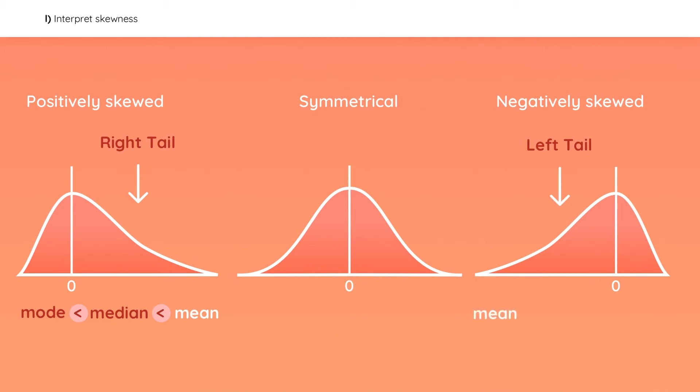The mean in this case is closest to the tail, so it is the smallest value, followed by the median, and then the mode. For symmetrical distributions, all three values are equal.